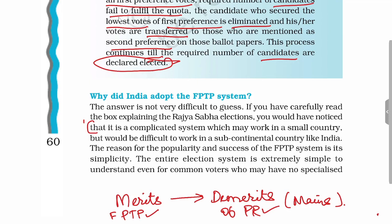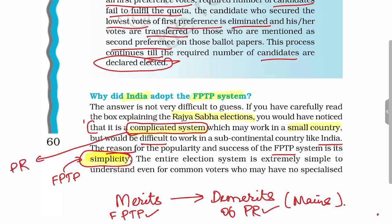We are now seeing the advantages of FPTP because of which India has adopted it. Elections of Rajya Sabha are very complicated. This kind of complex system would work in a small, highly educated country, but it would be very difficult in a subcontinental country like India with a population of more than 120 crore. So the reason for the popularity and success of FPTP in India is its simplicity.